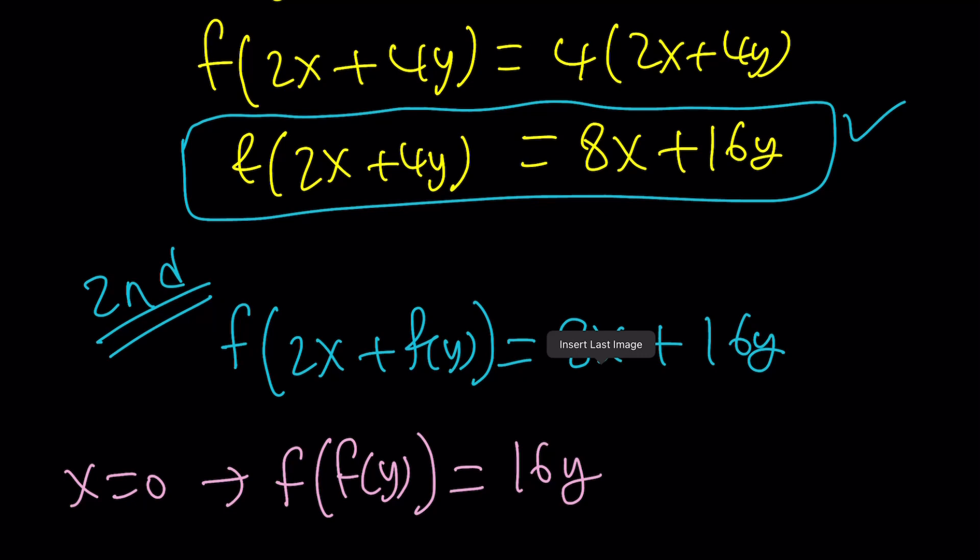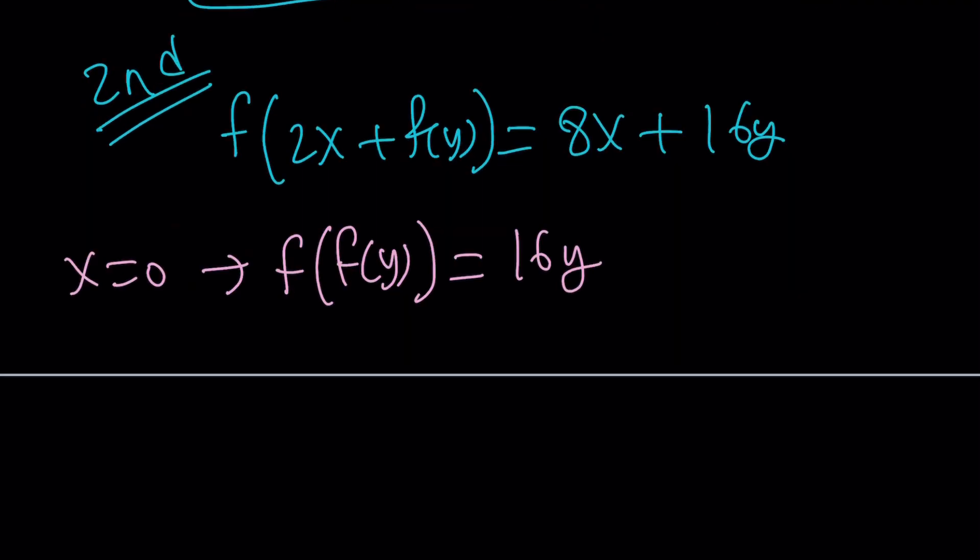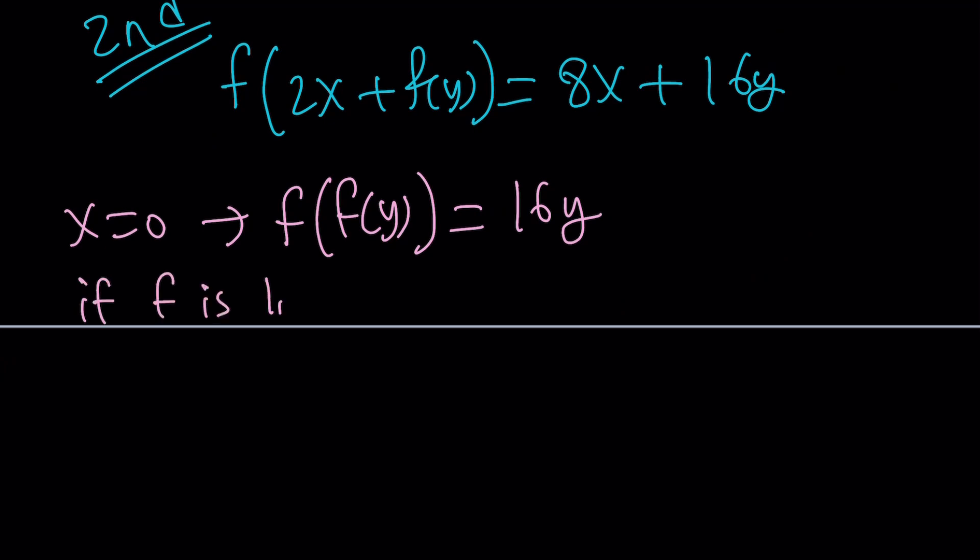So, here's the question. If f is linear, then it's supposed to be 4y. Why? Because you're applying f twice and getting 16 times y, which means one application should be 4 times y. 4 times 4 times y is 16y. But do we know if f is linear? We don't know that.